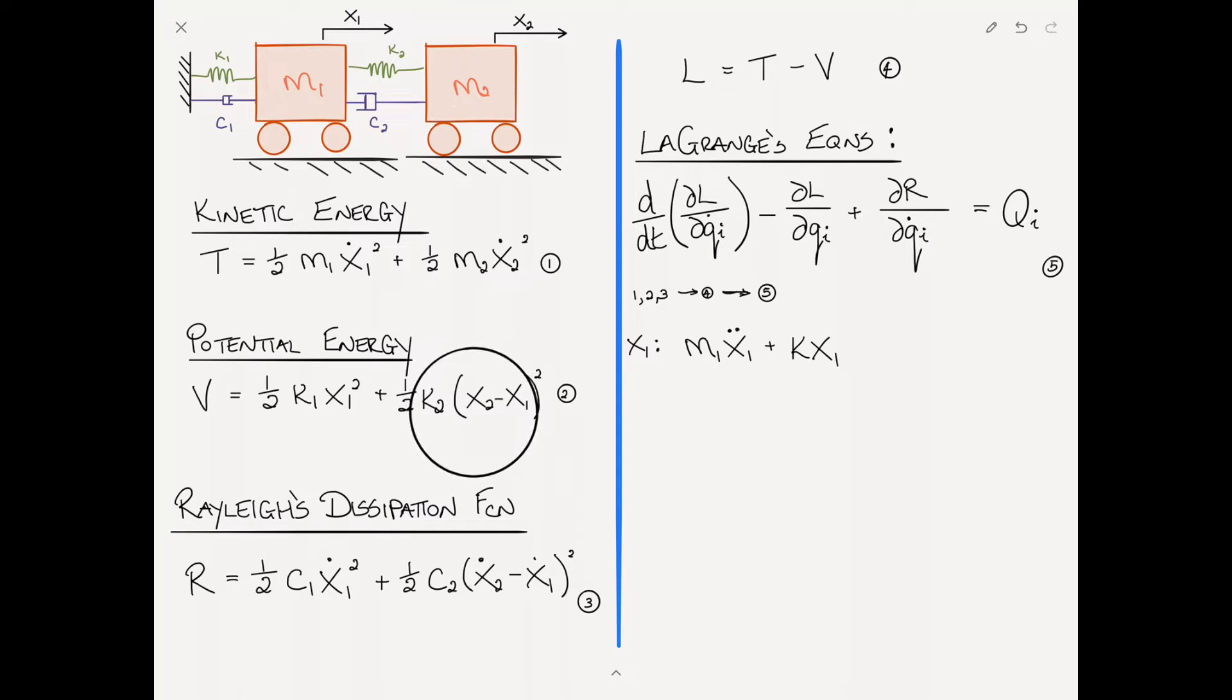There's also x1 in this term, so we take the derivative of that, giving minus k2 times x2 minus x1. The derivative gives 2 times x2 minus x1, times the derivative of what's in the brackets which is minus 1, hence the minus sign.